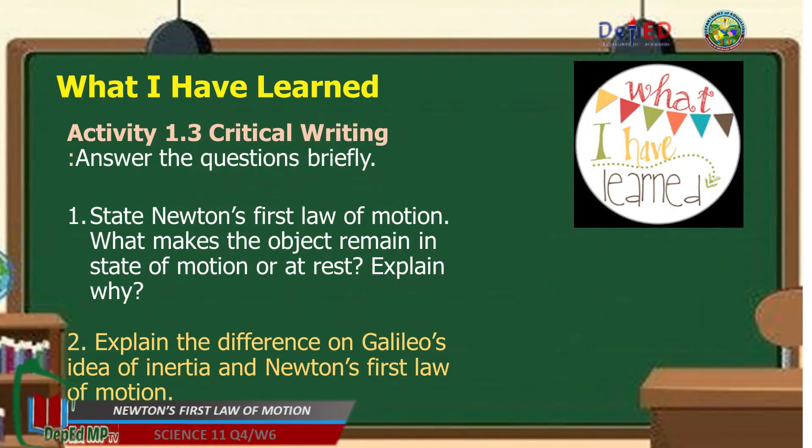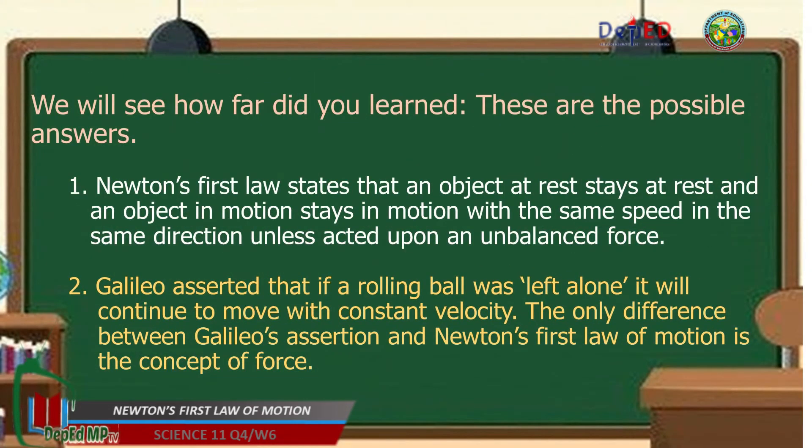Turn your self-learning module. Number one, state Newton's first law of motion. What makes the object remain in state of motion or at rest? Explain why. Number two, explain the difference on Galileo's idea of inertia and Newton's first law of motion. You will see how far did you learn. These are the possible answers. Number one: Newton's first law states that an object at rest stays at rest and an object in motion stays in motion with the same speed in the same direction unless acted upon by an unbalanced force. Number two possible answer is: Galileo asserted that if a rolling ball was left alone it will continue to move with constant velocity. The only difference between Galileo's assertion and Newton's first law of motion is the concept of force.